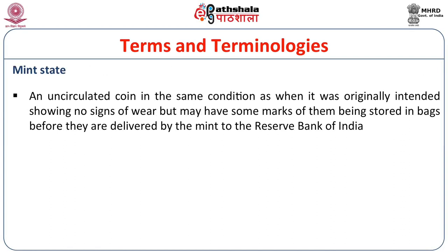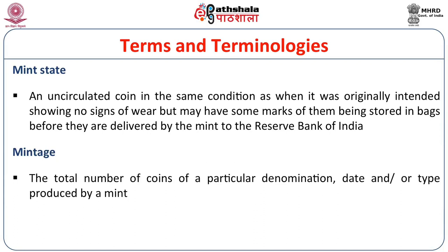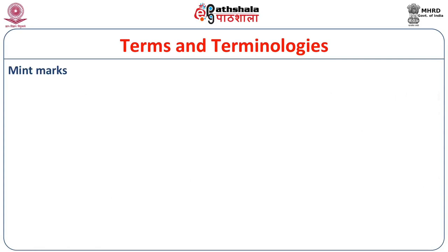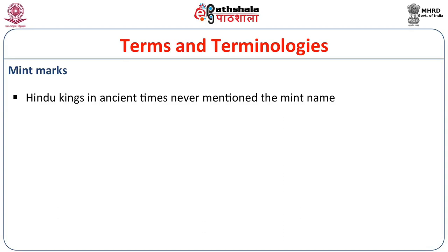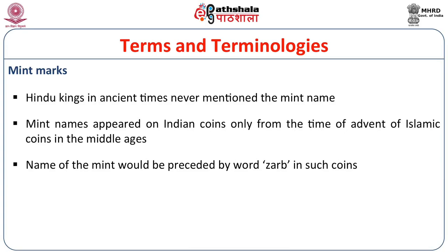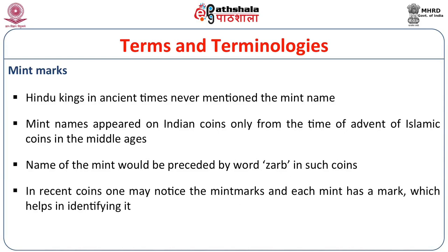Mint state refers to an uncirculated coin in the same condition as when originally minted, showing no signs of wear, but may have some marks from being stored in bags before delivery by the mint to the Reserve Bank of India. Mintage is the total number of coins of a particular denomination, date, and type produced by a mint. The mint notifies the number of commemorative coins being minted. Coins also have mint marks. Hindu kings in ancient times never mentioned the mint name; mint names appeared on Indian coins only from the advent of Islamic coins in the middle ages, preceded by the word Jarab. Each mint has a mark which helps in identifying it.